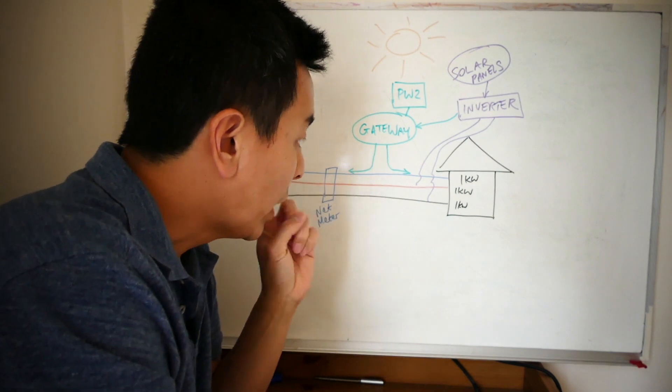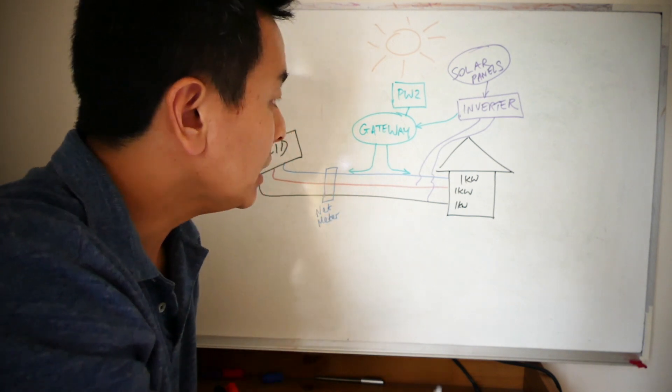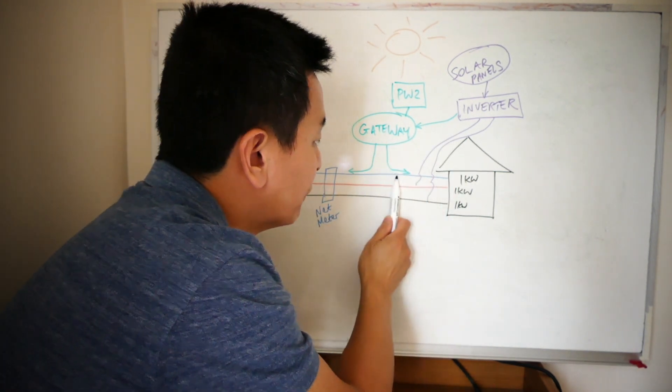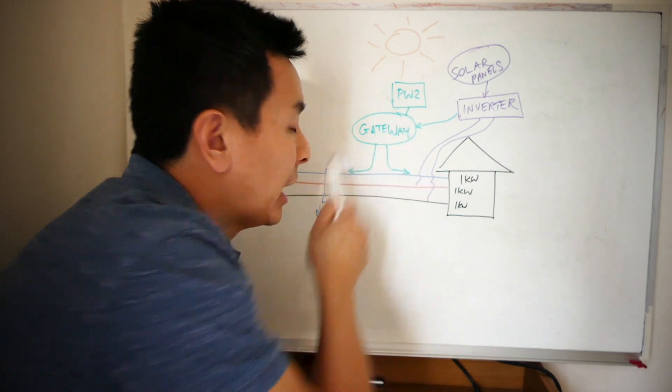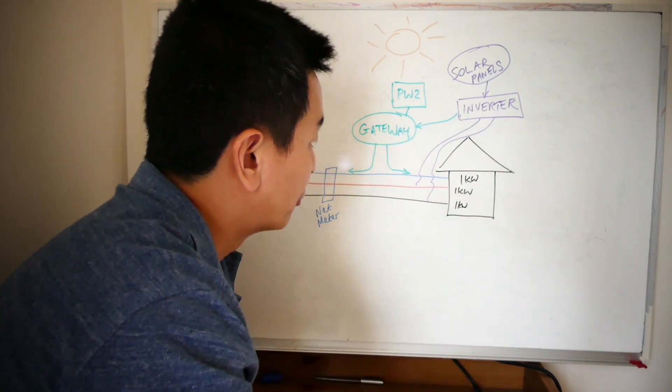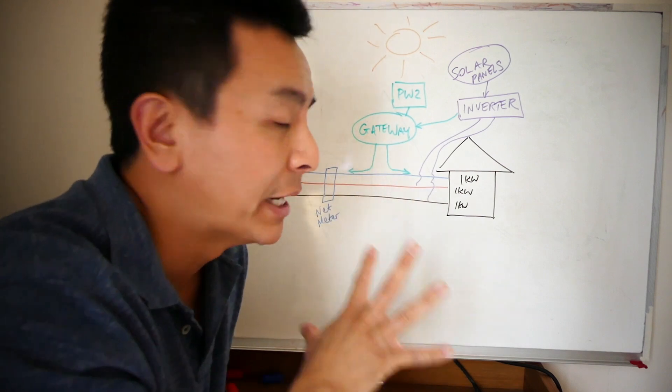What happens in that situation if you've got a blackout? Okay, so in a blackout, the gateway will have enough charge to power your home on this phase alone until the Powerwall 2 drains itself to zero. Because it's a three-phase inverter, you need three phases of power from the grid, right, or from some sort of battery source.